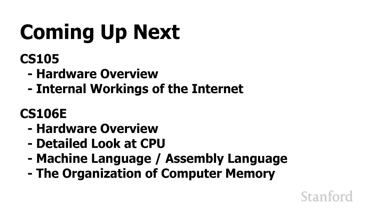That's it for this week. Next week, we're going to take a look at computer hardware. CS106E is going to go into a deep dive on how the central processing unit works and how computer memory works. CS105 is going to start off with a look at computer hardware and then move on to how the internet works. I look forward to seeing you then.